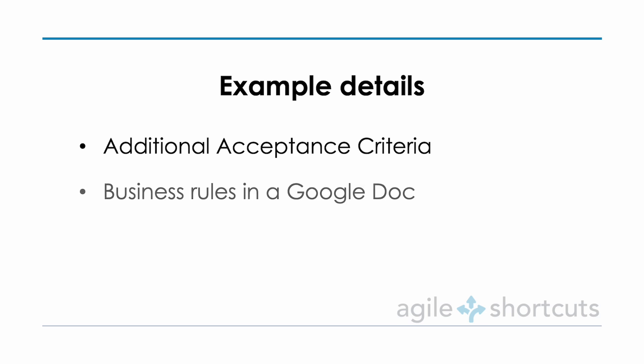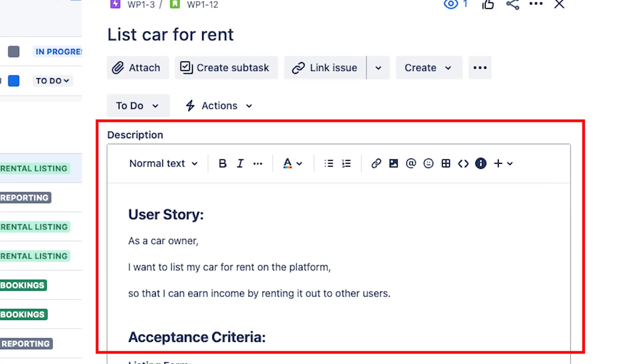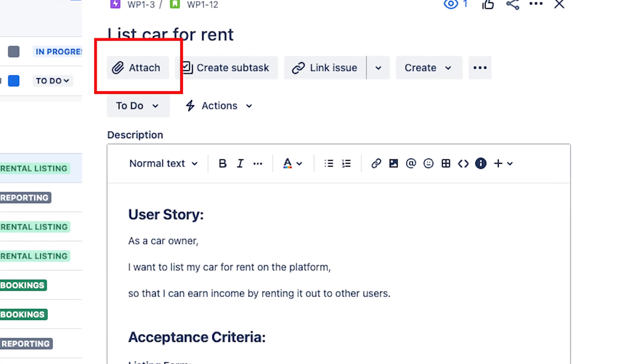It could also be a wireframe of a user interface created in a tool like Miro. Jira makes capturing this detail easy — you'll either capture it in the description field or potentially as attachments. Bottom line: your product backlog items need to be sufficiently detailed so the team remembers what needs to be done, which means they will create a more realistic sprint plan and in turn are more likely to complete it.